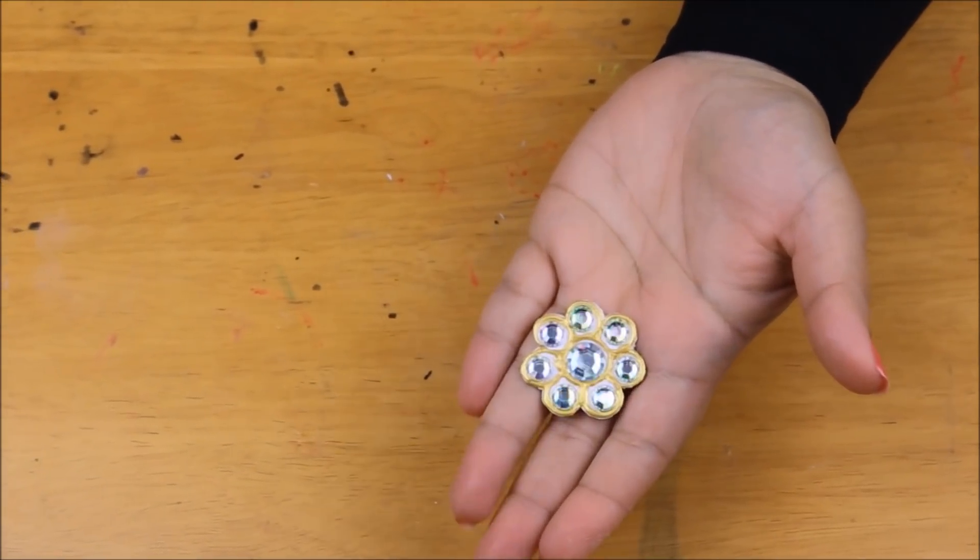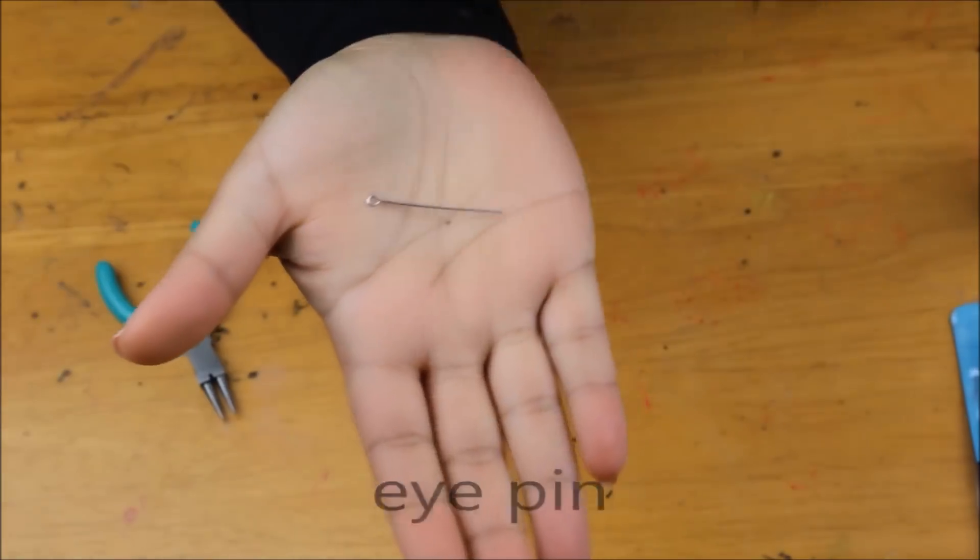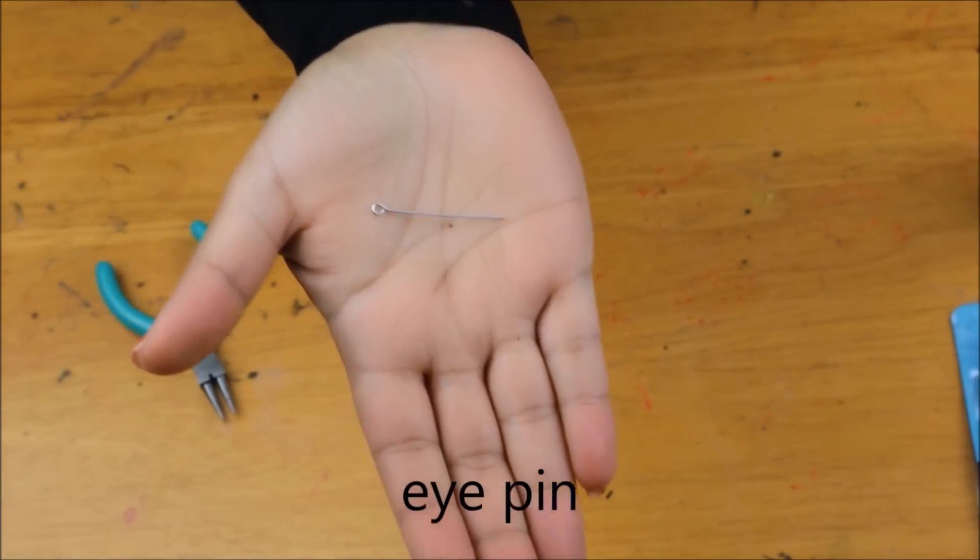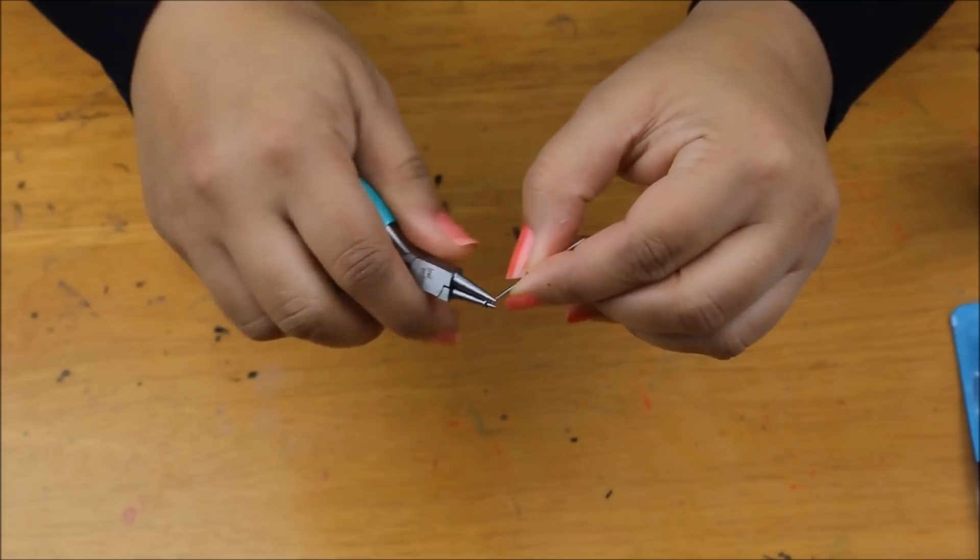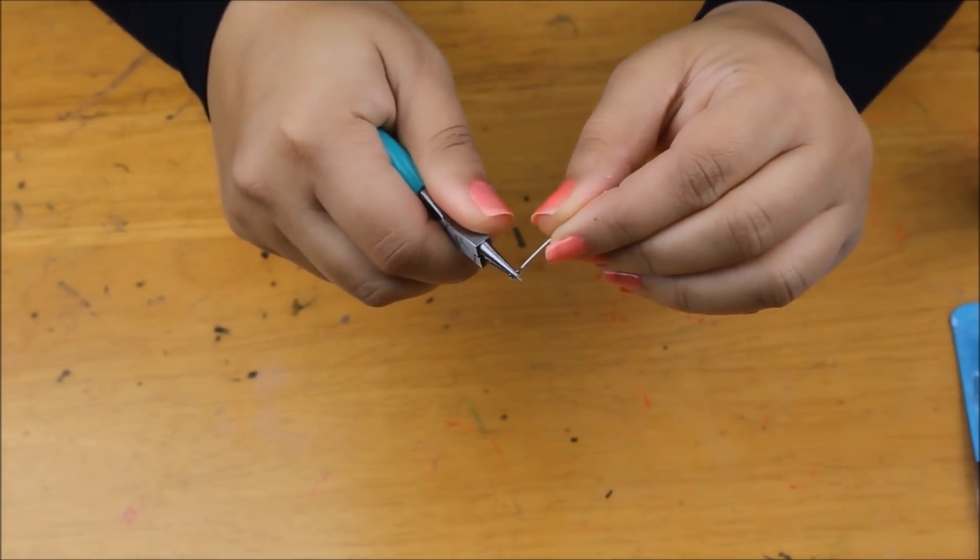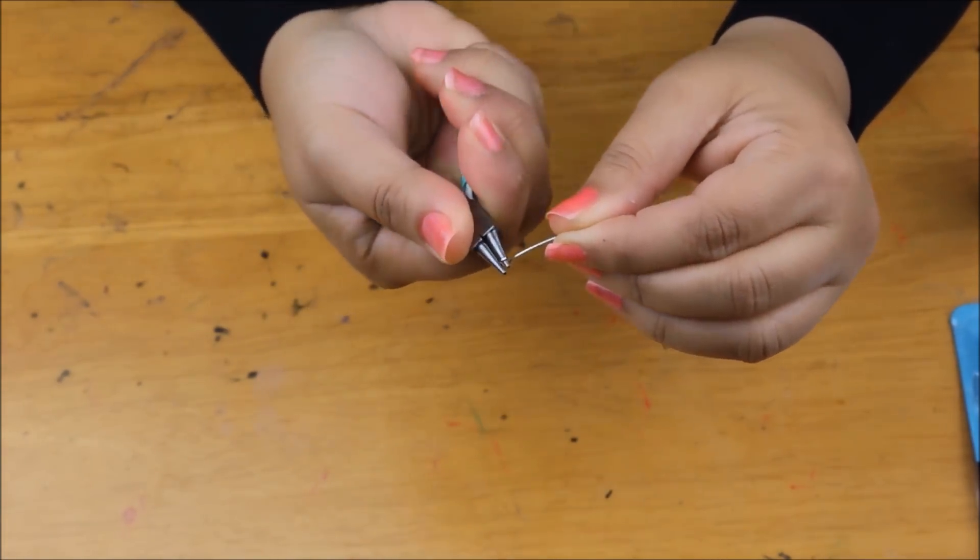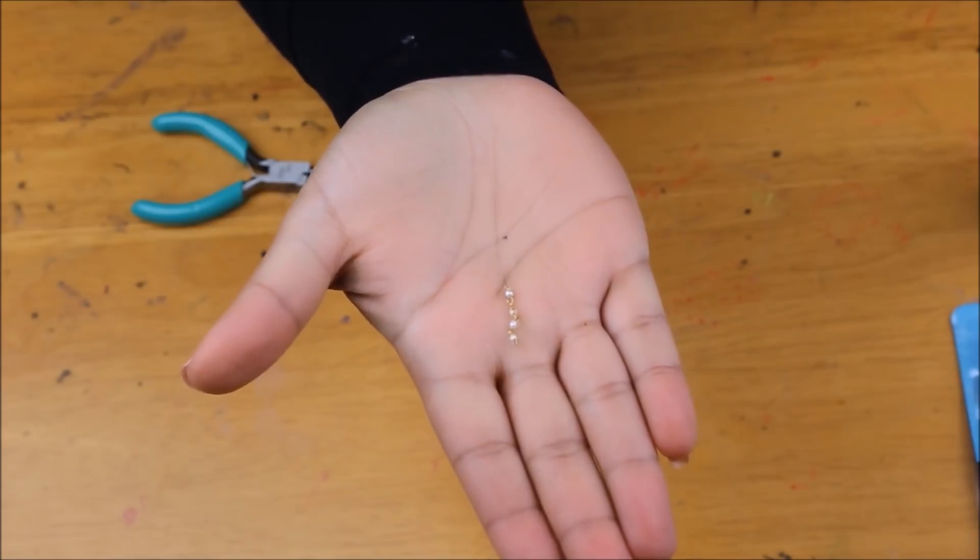To make the dangling pearls from this pendant, I'm going to take this eye pin and open up the eye of the eye pin where I can attach four pearls and then I'm going to lock everything in its place just so the pearls are secure and it's easier for me to attach this to the back of the pendant.